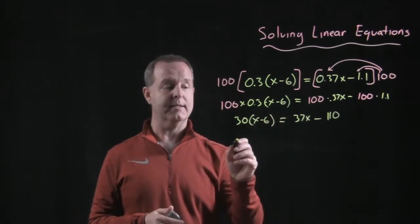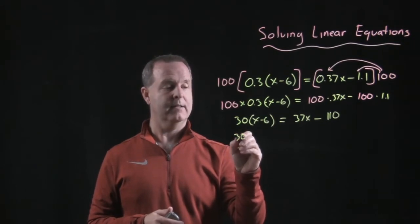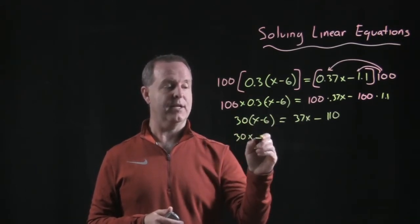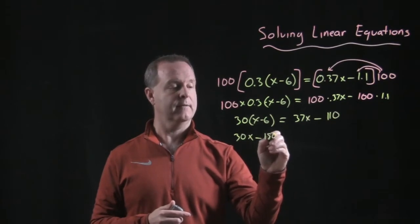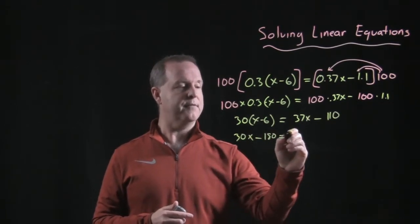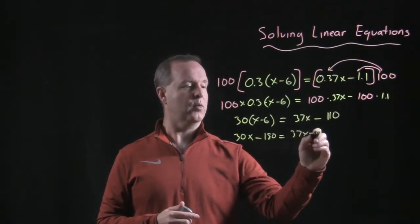Let's distribute the 30 across. So I have 30 times x minus 30 times 6, which is 180. And then I have 37x minus 110.